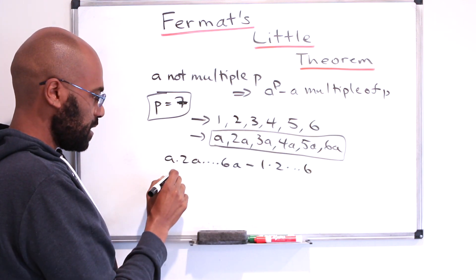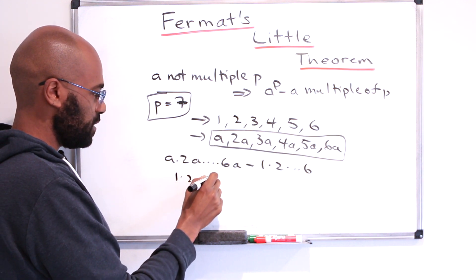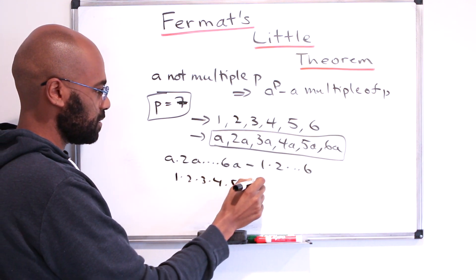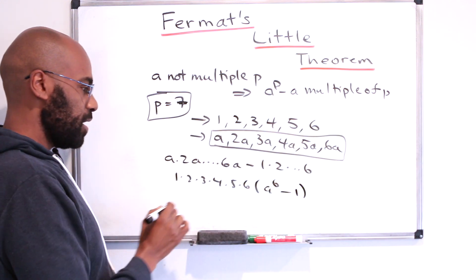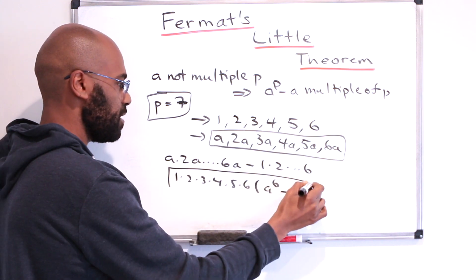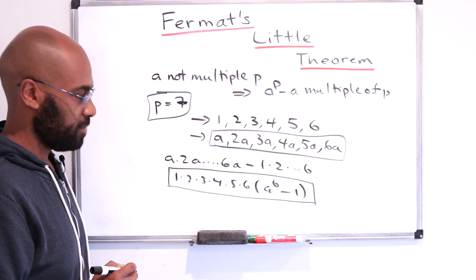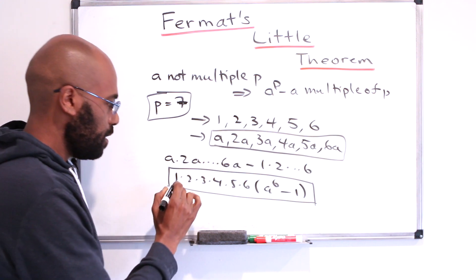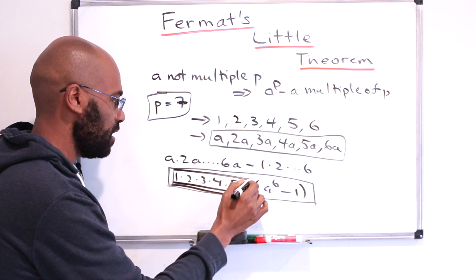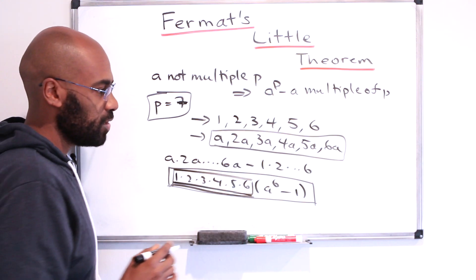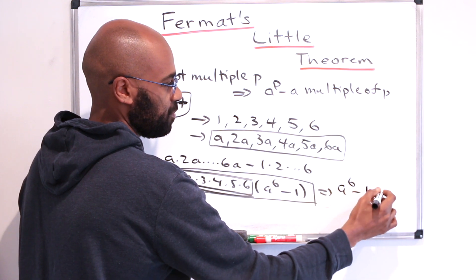This difference has a common factor of 1 times 2 times 3 times 4 times 5 times 6. Here we get an a to the 6, and then here we get a factor of 1. So this number right over here has to be a multiple of 7. But we don't see any 7s involved in this piece of the product, so that means that this number here is a multiple of 7.